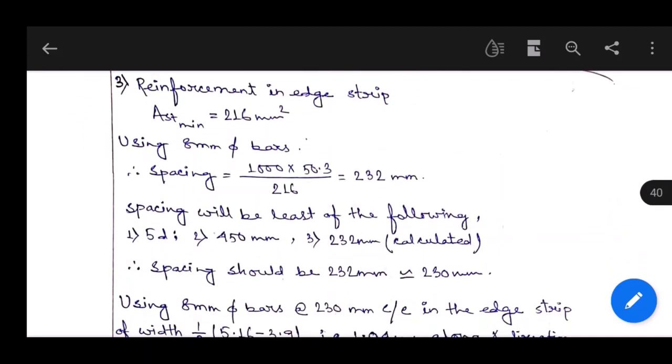For reinforcement in edge strip, we calculated earlier that AST minimum equals 216 mm square. Using 8 mm dia bars, the spacing will be 1000 times 50.3 by 216, equals 232 mm. Spacing will be least of the following: 5d, 450 mm, and 232 mm calculated. Spacing should be 232 mm or 230 mm.